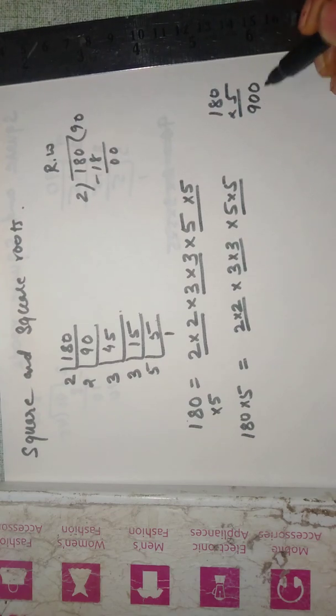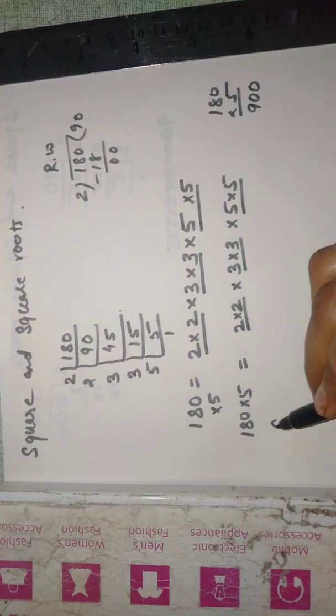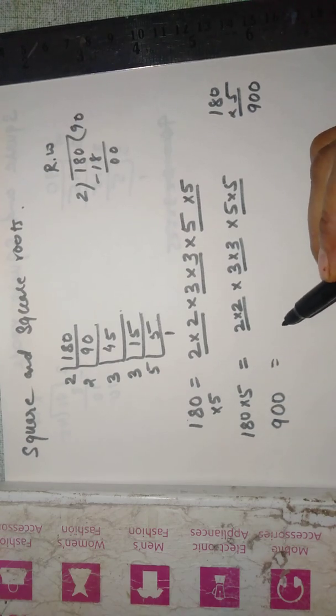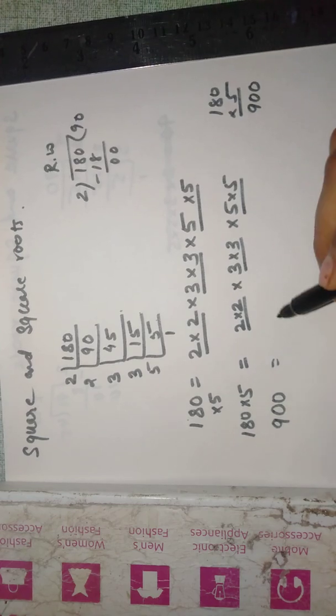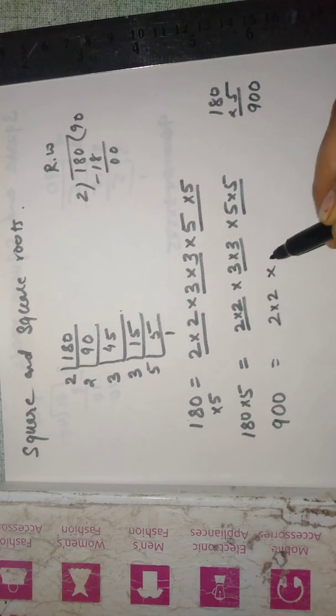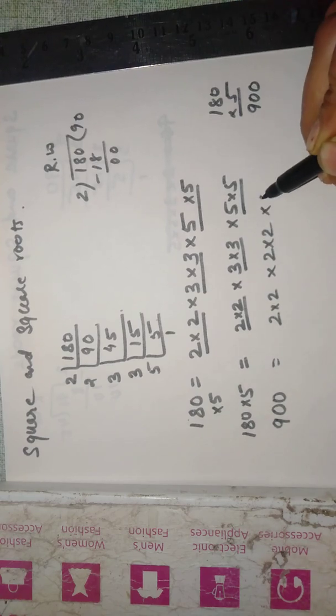And 180 into 5 you can find out in rough as 900. 18 times 5 is 90 and 0. So 900 is that number which is a perfect square. And then we can find out the square root of this number.